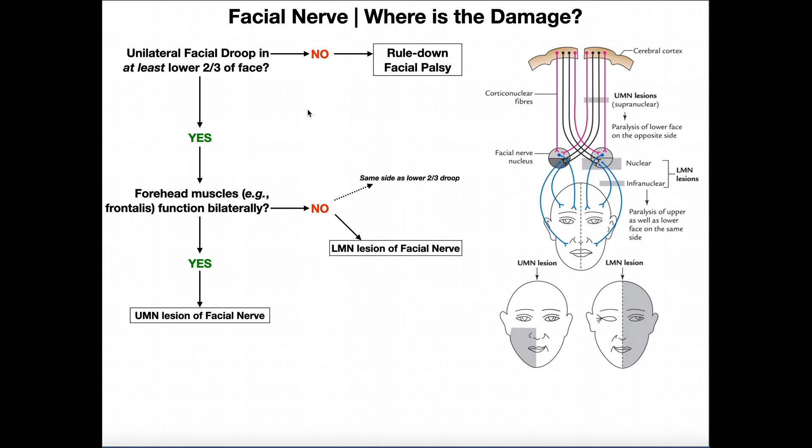The facial nerve is cranial nerve number seven, and this nerve innervates all of the facial muscles. When you think about zygomaticus major, zygomaticus minor, orbicularis oculi, orbicularis oris, frontalis — all your facial muscles are innervated by the facial nerve. In addition to producing actions for facial expressions, these nerves allow some degree of tone in these muscles.